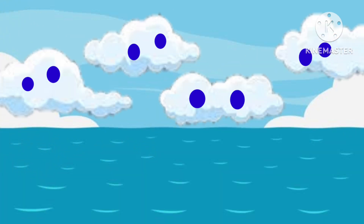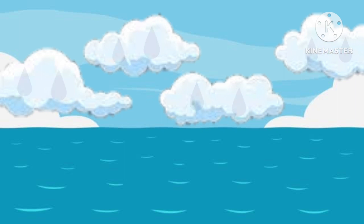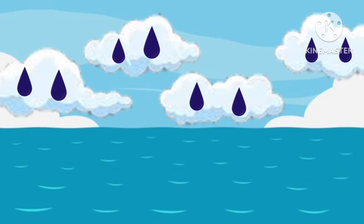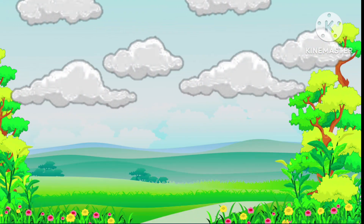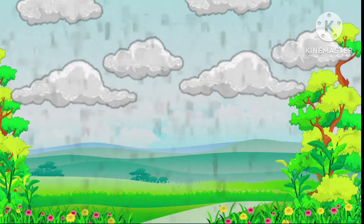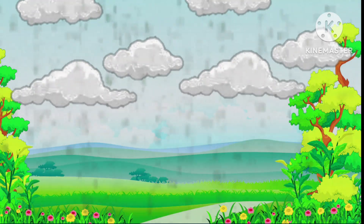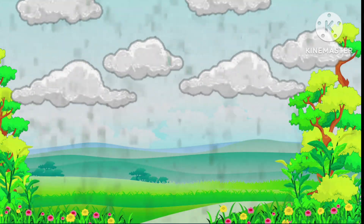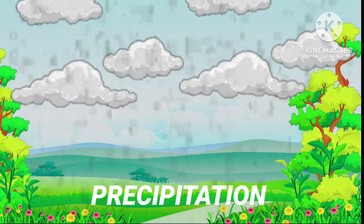When water vapor droplets cool down and turn back into liquid, this process is called condensation. When water from the clouds falls in the form of rain or snow, this is called precipitation.